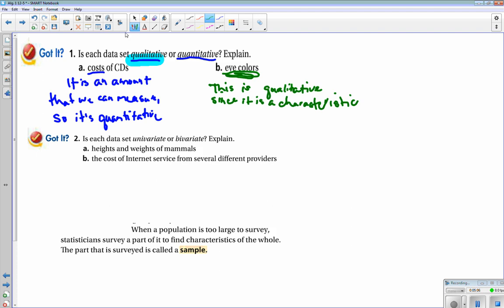All right, and let's look at number two. Is each set univariate or bivariate and explain?